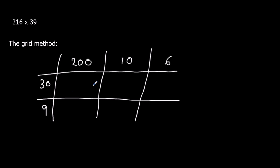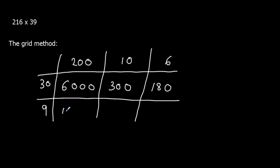We're going to do all these multiplications. 200 times 30: we just do 2 times 3, which is 6, and add on three zeros — 6,000. 10 times 30: 1 times 3 is 3, add on two zeros — 300. 6 times 30 is 18, add a zero — 180. 200 times 9: 2 nines are 18, add two zeros — 1,800. 10 times 9 is 9, add a zero — 90. And 6 times 9 is 54.